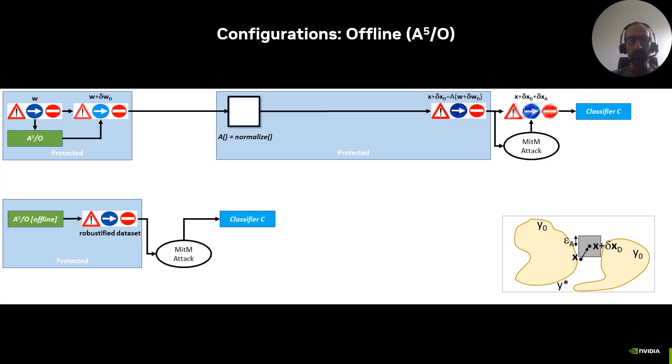The first configuration is A5 offline, or A5/O. Given an image x, we solve the optimization problem of finding a defensive perturbation delta xT that makes the image not attackable for a given classifier. In practice, we can create datasets that are certifiably non-attackable for a given classifier. This has little practical importance, but it helps to quantify the potential advantage provided by A5 and answer an important theoretical question: how does a non-attackable image look like?